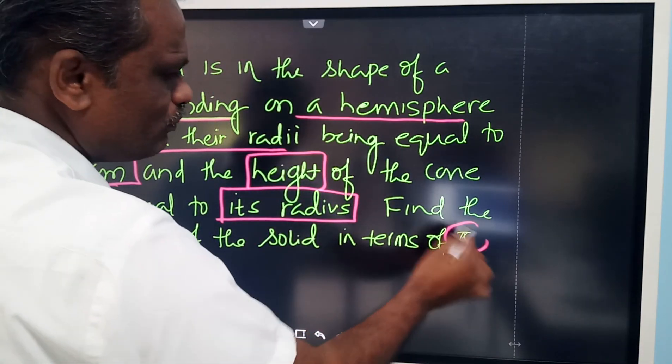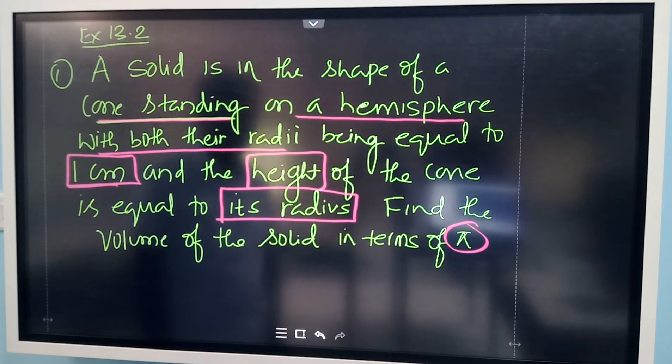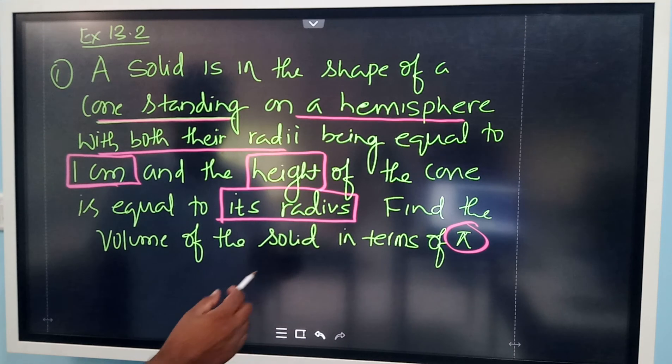Find the volume of the solid in terms of π. That means don't substitute the value of π, keep it as is. So the diagram must be like this.